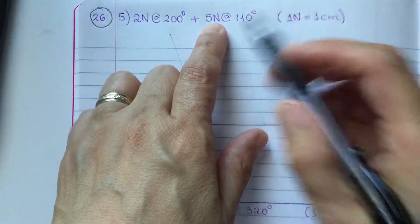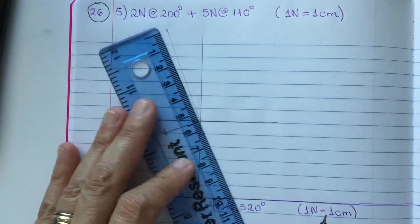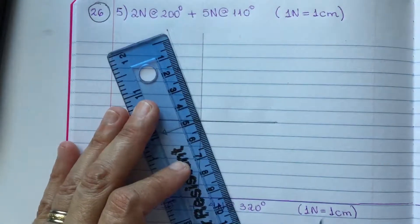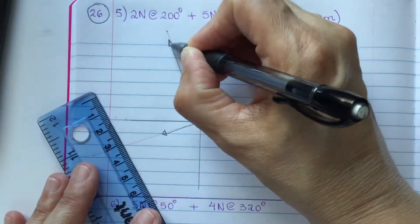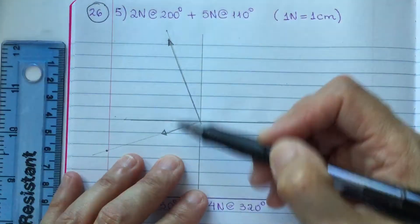Now, use a ruler and mark five centimeter, which is equivalent to 5 newtons. So, now you have both vectors.